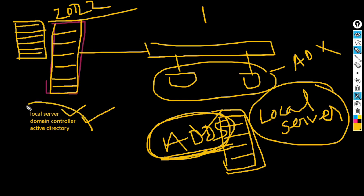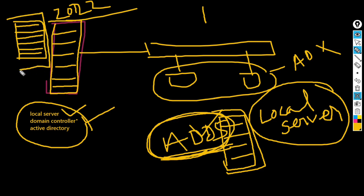So here are our three key points. First: a local server is a computer running a server operating system. Second: a computer running Active Directory Domain Services is called a domain controller. Third: Active Directory is a centralized database that stores all the users, groups, OUs, and computers. Active Directory is a centralized database where all the user groups and credentials are stored.